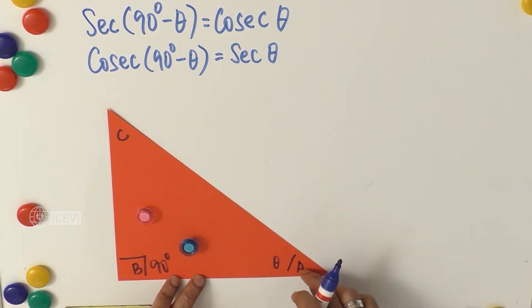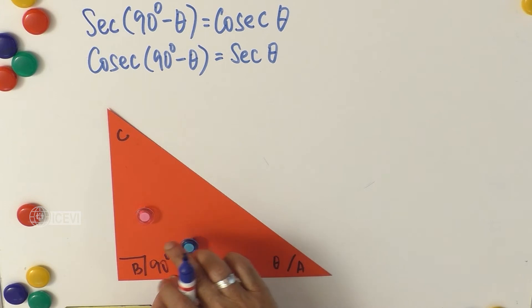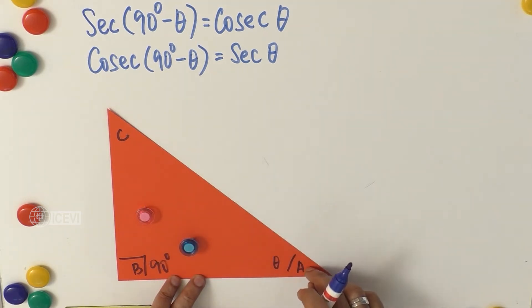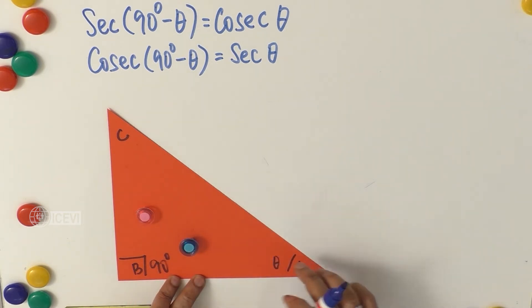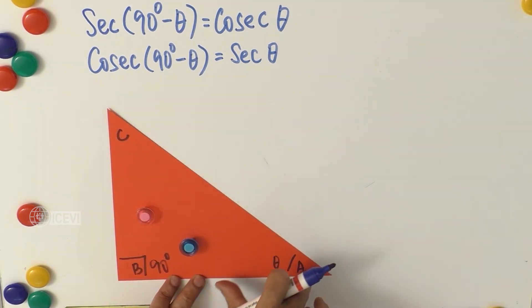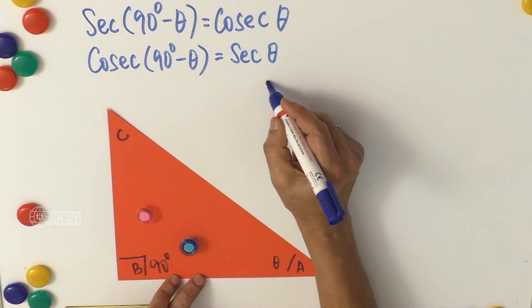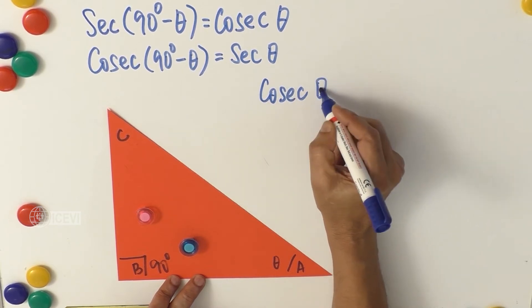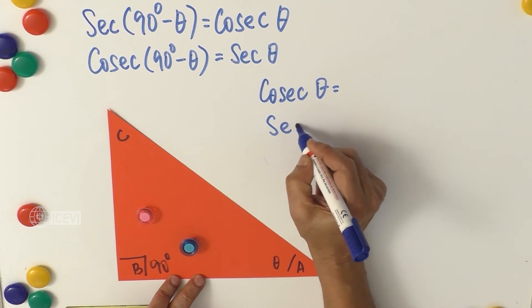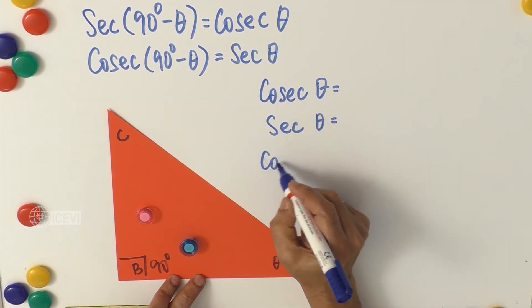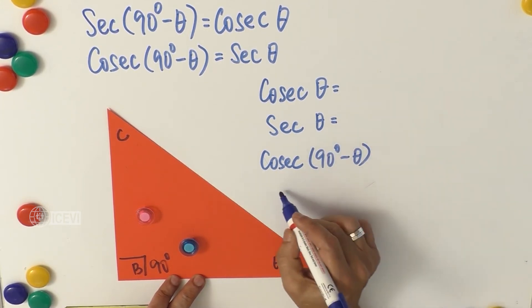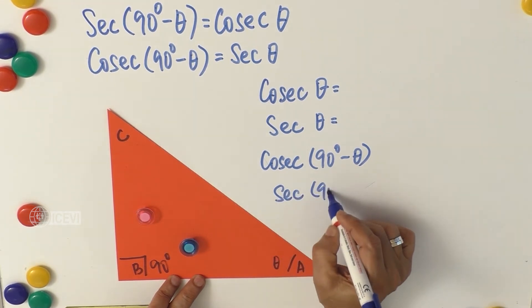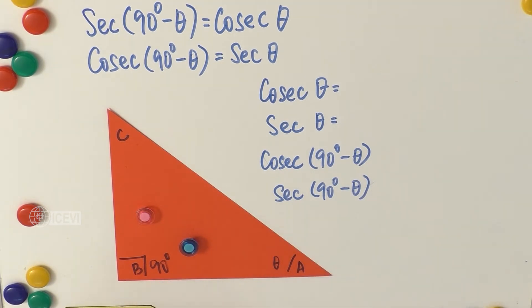The three angles of a triangle together equal 180 degrees. If we know the exact measurement of angle A, we can apply specific formulas — as in the cases of 30°, 45°, and 60°. When we do not know the exact values, we simply use the sides as references. Now let us find cosecant theta, secant theta, cosecant(90° minus theta), and secant(90° minus theta) — four values in total.